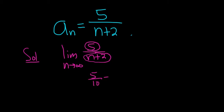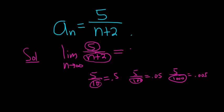So like 5 over 10 would be .5. 5 over 100 would be .05. 5 over 1000 would be .005. So as the bottom gets bigger, the fraction gets smaller and smaller and smaller. So this gets closer and closer to 0.